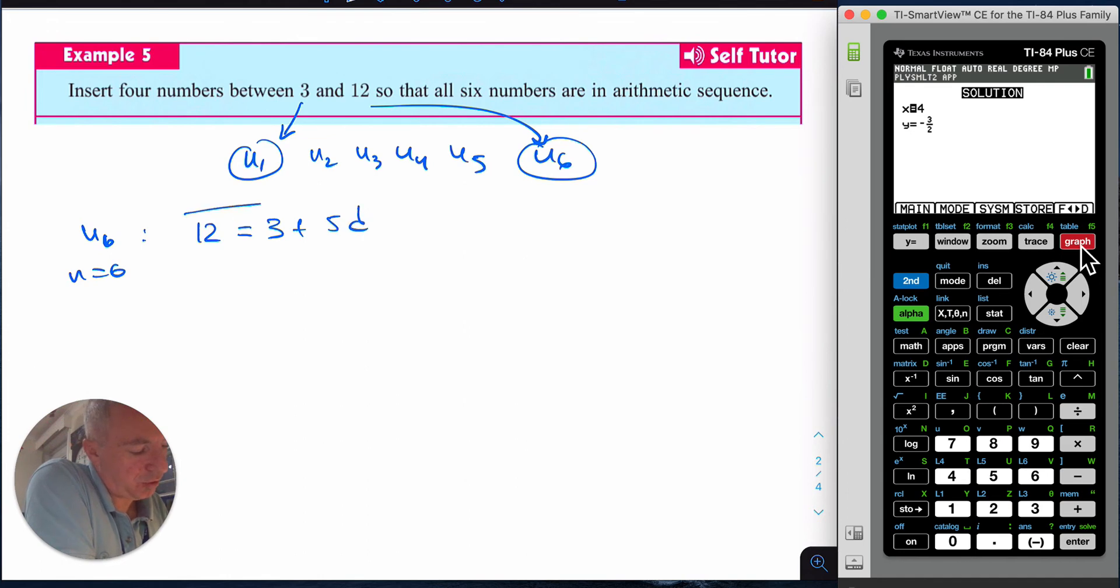I can solve this now in multiple ways. I can just subtract 3 from both sides, so I get 9 = 5d, so d = 9/5.